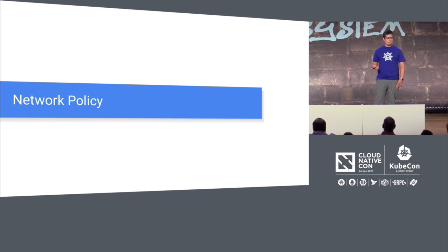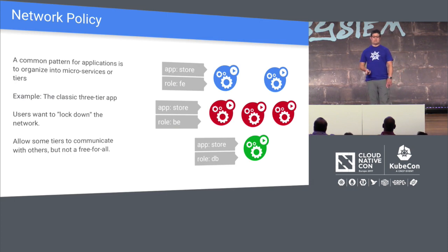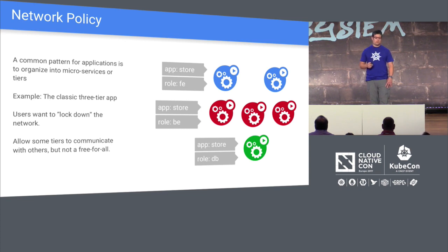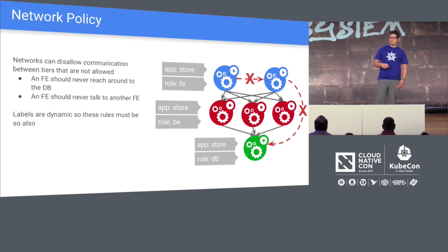Let's end the talk with network policy. A lot of applications in Kubernetes end up having tiers of setup for their microservices — they want to scale in different dimensions. You have a front end, a back end, and a database. You wrap them all up in containers so you can have different environments and different ways to scale them. But often you want to lock down the network — you don't want them all communicating with each other; you want to control the communication, whether for security, debugging, or just knowing what's going on inside your system.